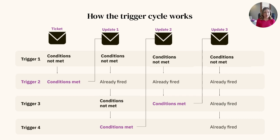Because of all this, triggers can affect one another. A ticket update by one trigger might cause another trigger, where conditions were not previously met, to become true and fire. So the order of your triggers is very important, as an action in one trigger might change a ticket property that was changed by another.